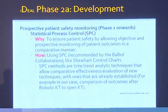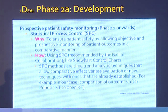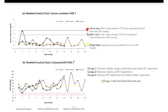Moving to the 'D' phase — Development — an important part was using statistical processes to monitor that no harm was being done. This was done to ensure patient safety and allow objective, prospective monitoring of patient outcomes in a comparative manner. Statistical process controls built into the IDEAL framework were used. One of these is the Shewhart control chart, a time-analytic technique. The background reference was 100 previous open transplants.